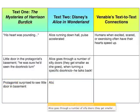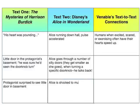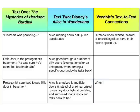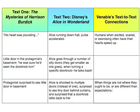Alice is shocked to see multiple doors instead of one — surprised to see a tiny door behind curtains, and surprised that a doorknob talks back to her. So let's carry on with this one because we've already made the connection, and the connection is: when things are not where they ought to be or are different than expectations, people are surprised.